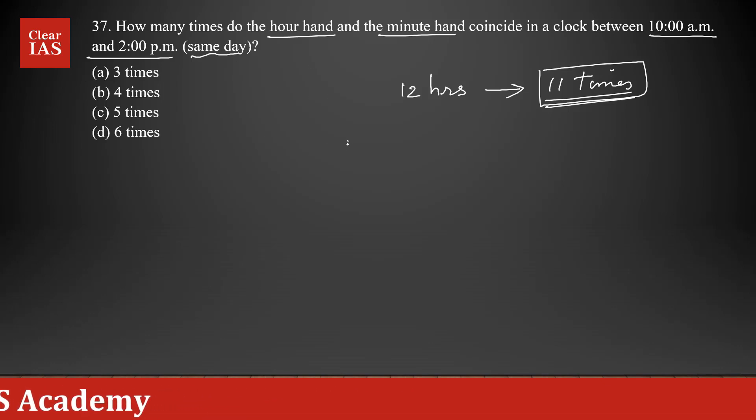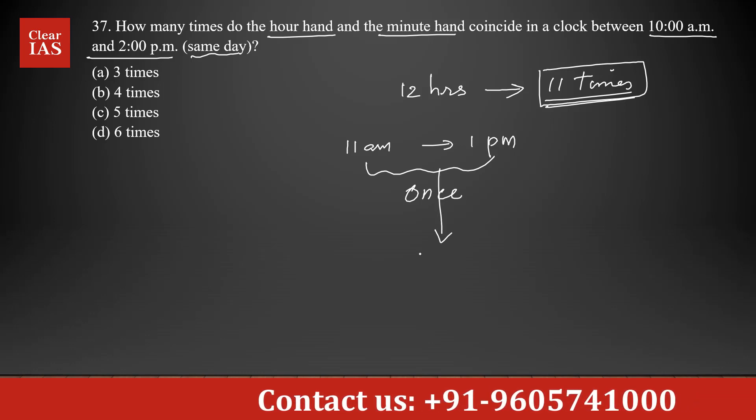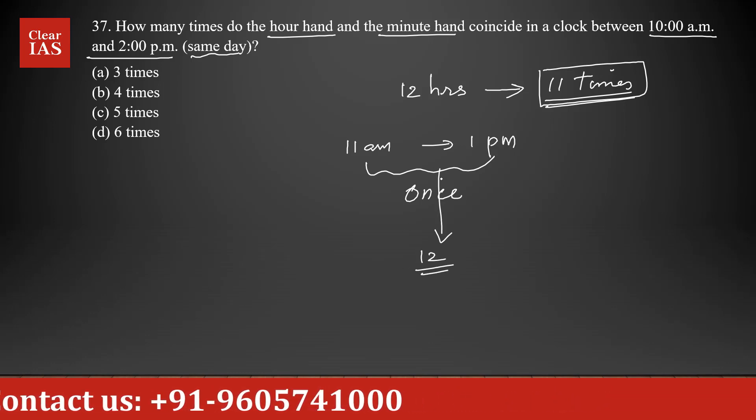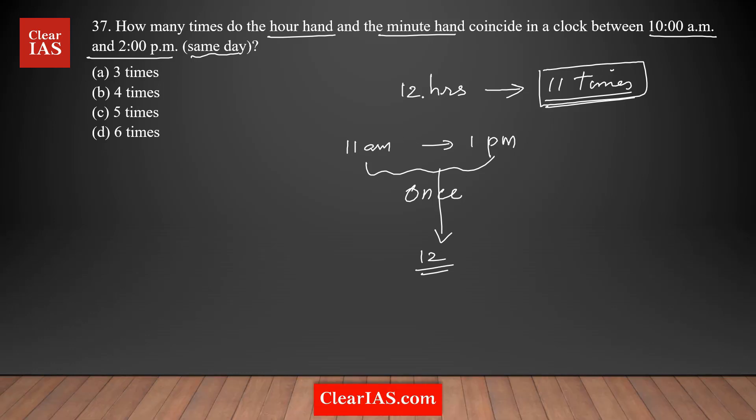Between 11 a.m. and 1 p.m., the minute hand and hour hand is coinciding only once, only at one time. What time? 12. That's the time. Between 11 a.m. and 1 p.m., it's coinciding only once. So that's the reason in 12 hours you are getting they are coinciding only 11 times. This makes a difference. 12 o'clock is the only place where between 11 a.m. and 1 p.m. both hour hand and minute hand is coinciding.